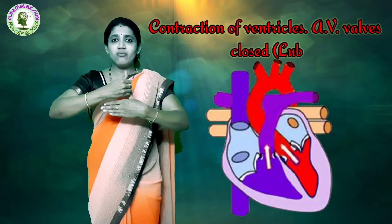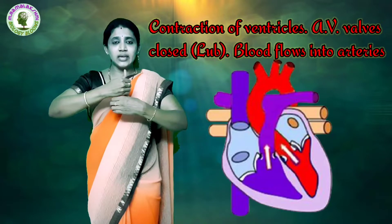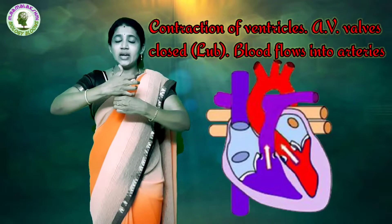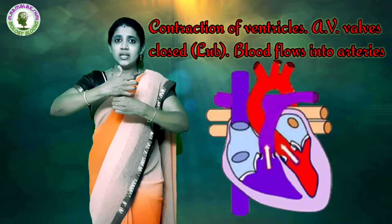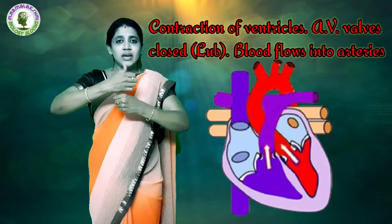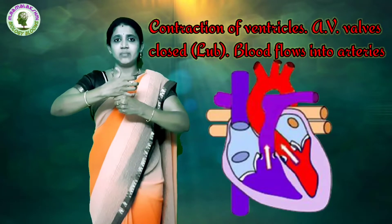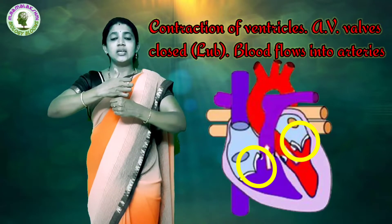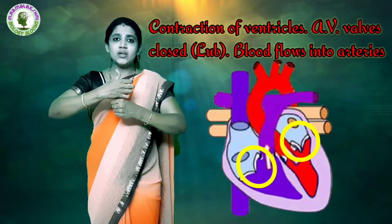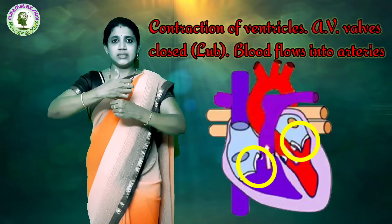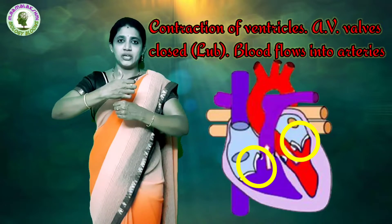In the fourth stage, the ventricles start contracting and at the same time the atria start relaxing. The aperture between the atria and the ventricles is closed by the tricuspid valve and the bicuspid valve, to prevent the back flow of the blood into the atria due to low blood pressure.